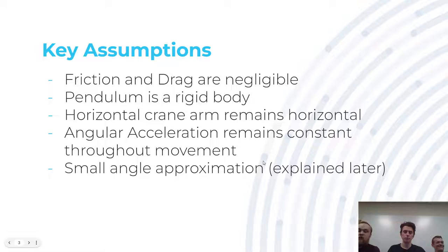We're also assuming that the pendulum is a rigid body. By that we mean we're assuming that it is not a cable attached to the ball, but instead a rigid beam. This will mean that as it swings around, the ball should stay perfectly in line with the end of the horizontal beam. We're also assuming that the horizontal crane arm remains horizontal, so it's not lifting and changing its angle.